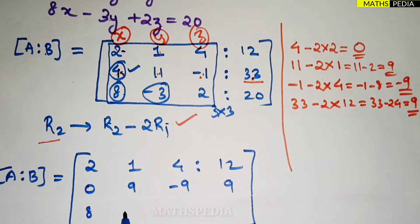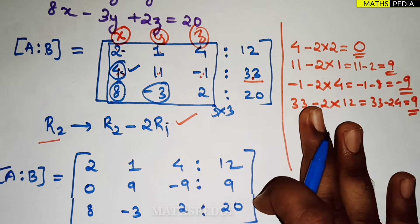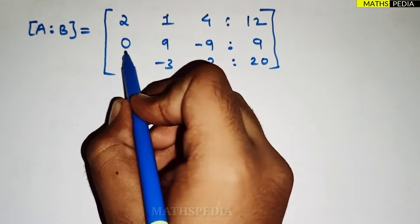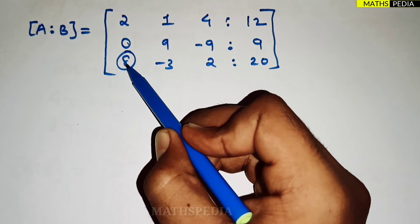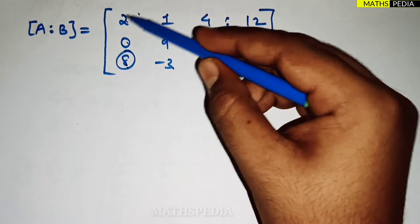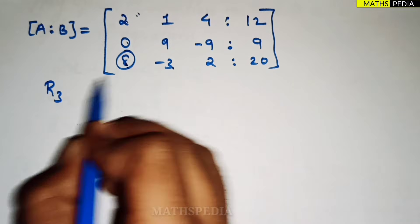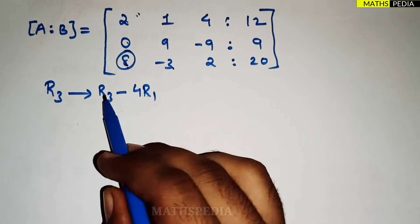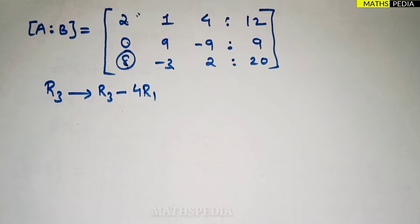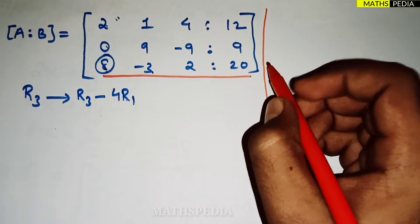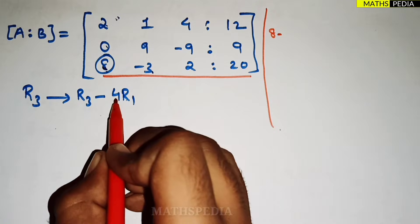The third row 8, minus 3, 2, 20 hasn't changed yet. Next I have to make 8 as 0. I can apply R3 = R3 minus 4*R1, because 4 times 2 is 8, so subtracting makes it 0. The whole third row will change. Let me do the calculation: first element 8 minus 4×2 = 8 minus 8 = 0.